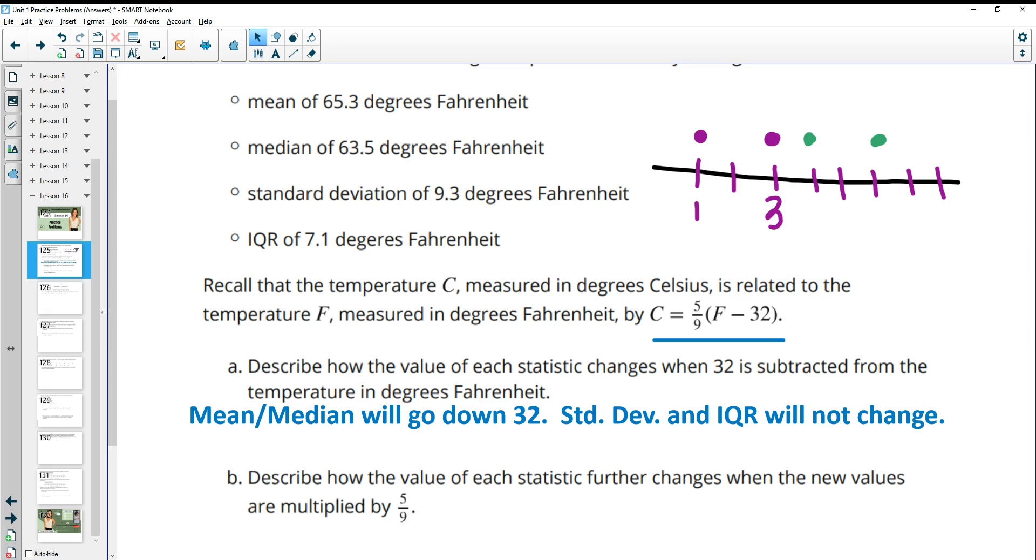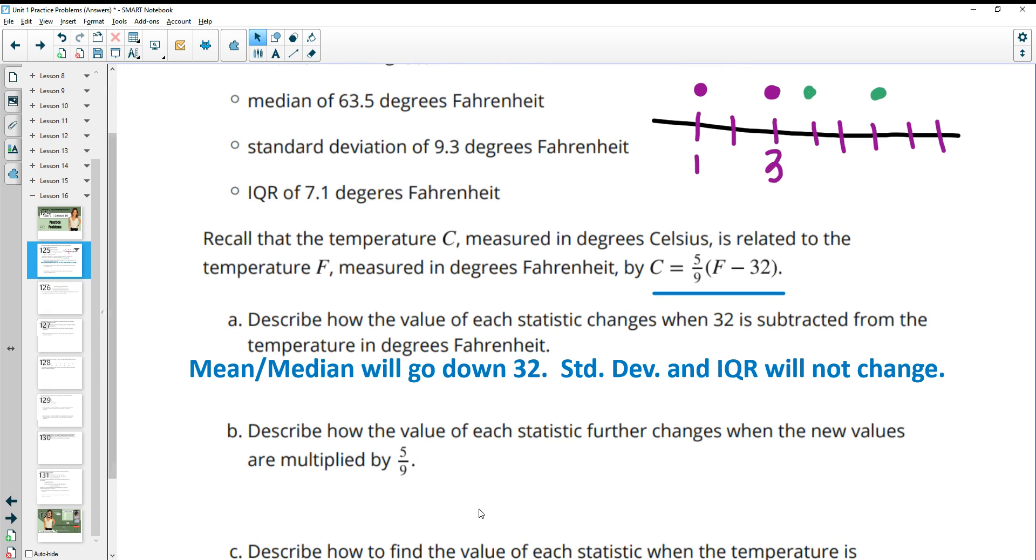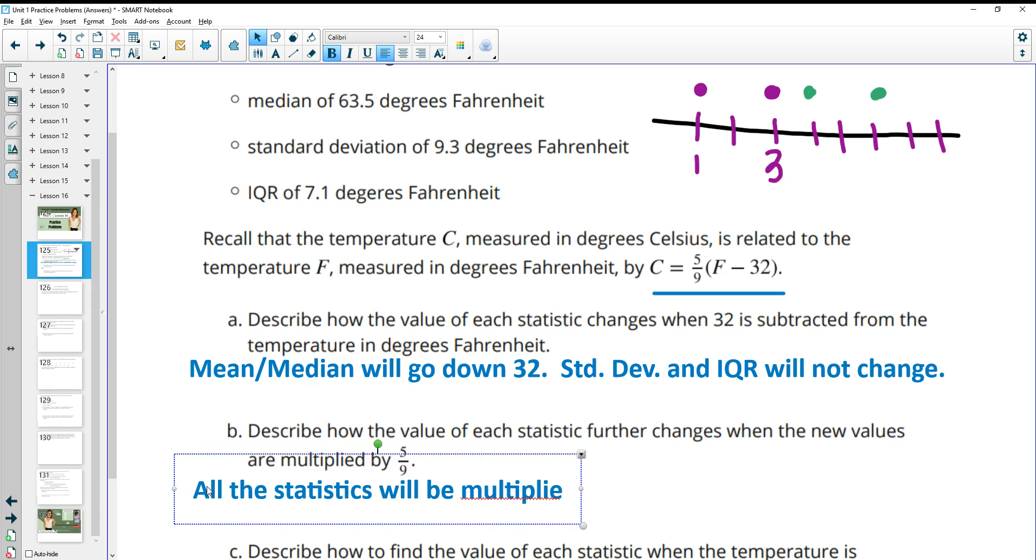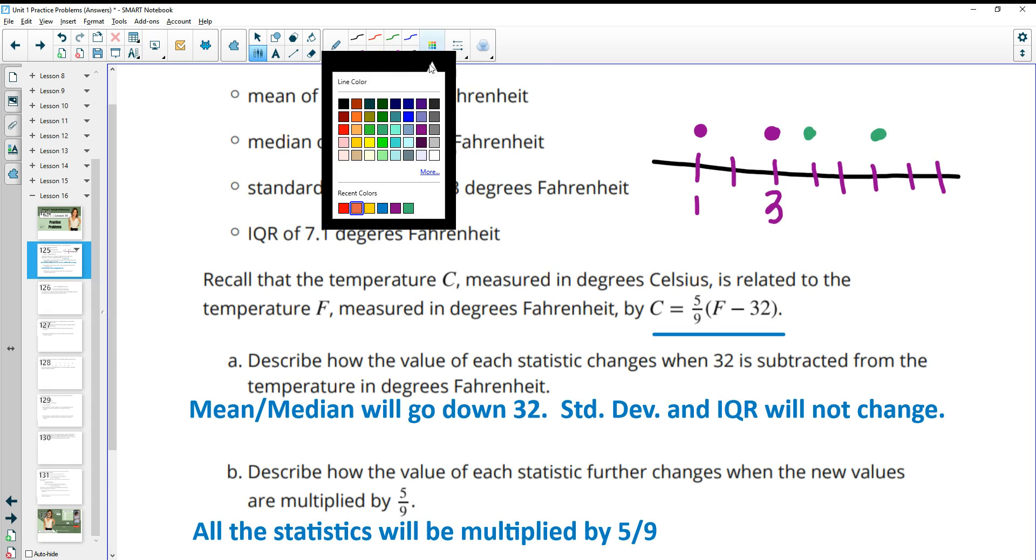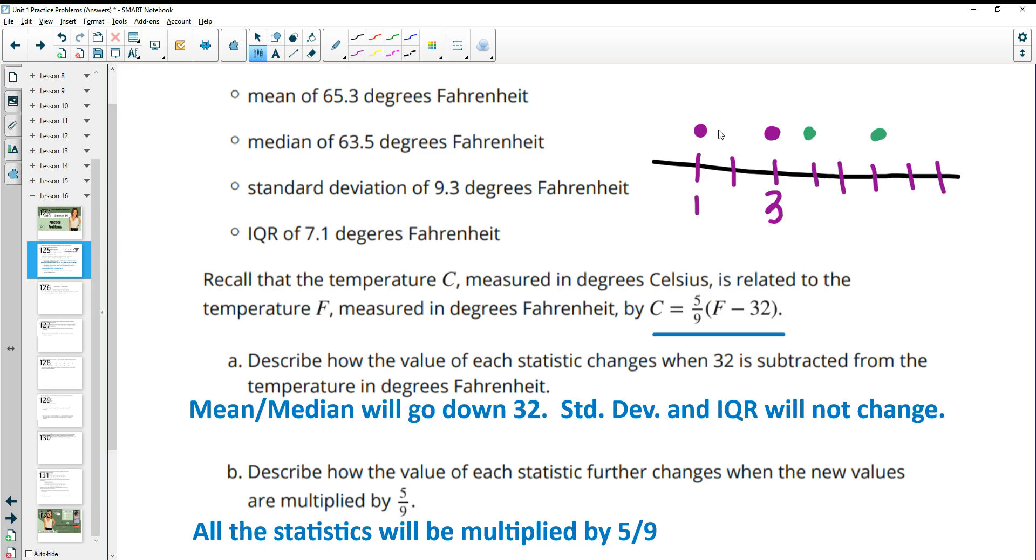Then part B says, describe how the value of each statistic will further change now when we multiply by 5 9ths. So now this time, all the statistics will be multiplied by 5 9ths. So adding and subtracting just shifts them but doesn't change the width or the variability. But now when you multiply them, that's going to actually change the width.